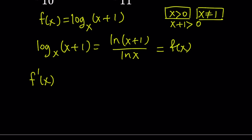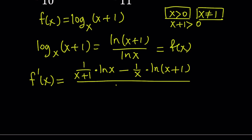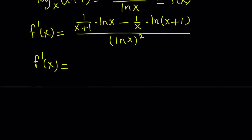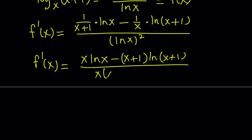To differentiate, we're going to use the quotient rule. Remember, the quotient rule is the derivative of the top times the bottom minus the derivative of the bottom function times the top, all divided by the bottom function squared. So it's going to look like this: 1/(x+1), the derivative of ln(x+1), times ln(x), minus the derivative of ln(x), which is 1/x, times the top function ln(x+1), all divided by (ln x)². Let's make a common denominator and write f' in simplest form. Multiplying gives us x·ln(x) minus (x+1)·ln(x+1), all divided by x(x+1)·(ln x)². So this is the derivative of f.